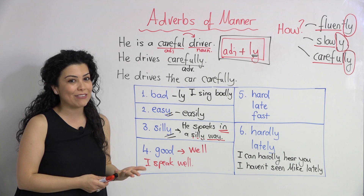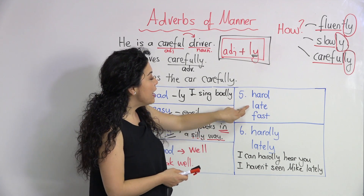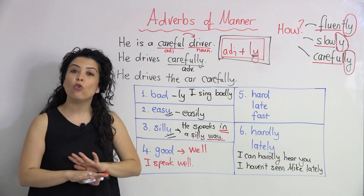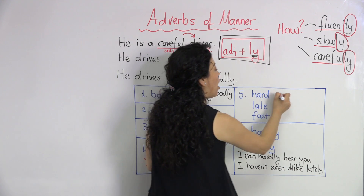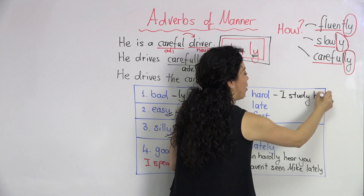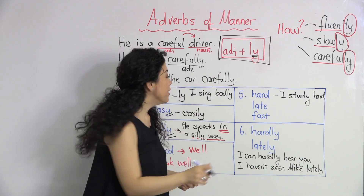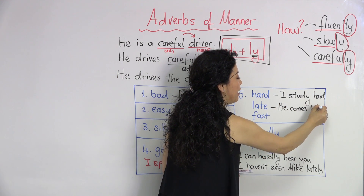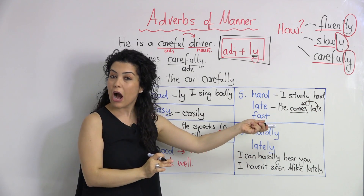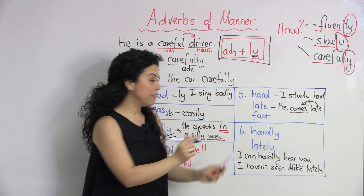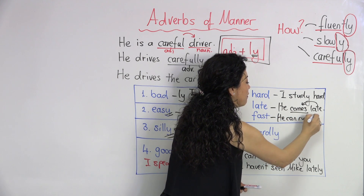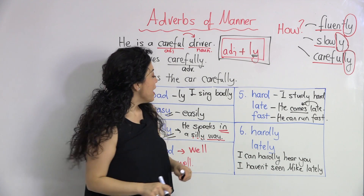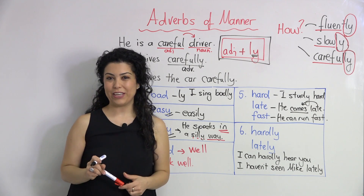Similarly, there are more exceptional cases. The adjectives 'hard,' 'late,' and 'fast' don't take -ly — they stay as they are and don't change form. For example: 'I study hard.' How do I study? Hard. Another example: 'He comes late.' And: 'He can run fast.' So no -ly — they don't change form.